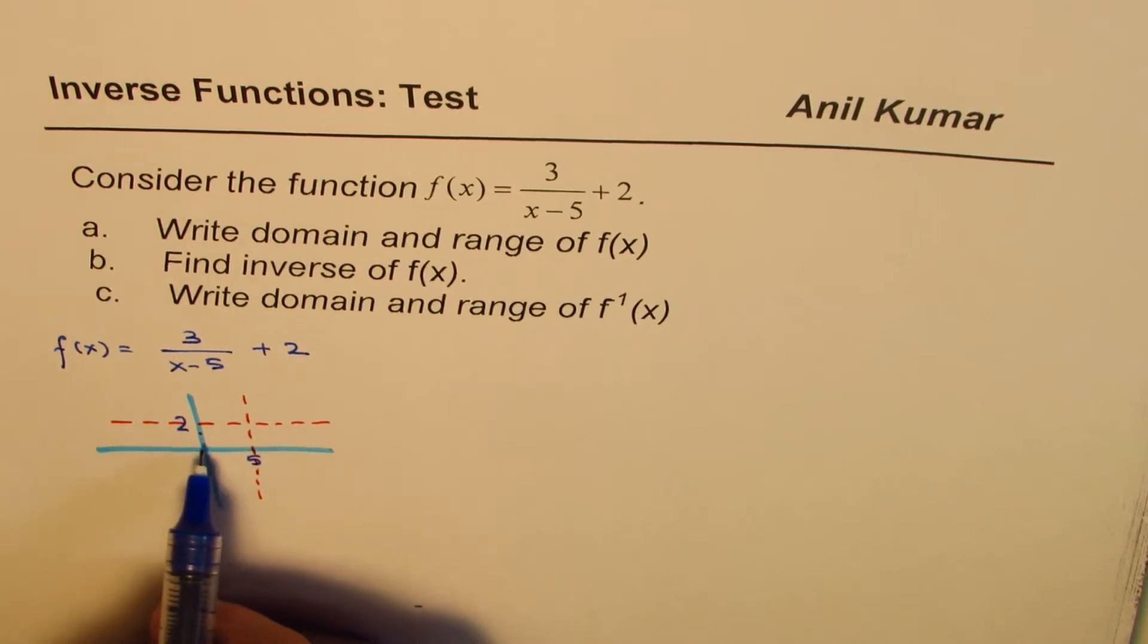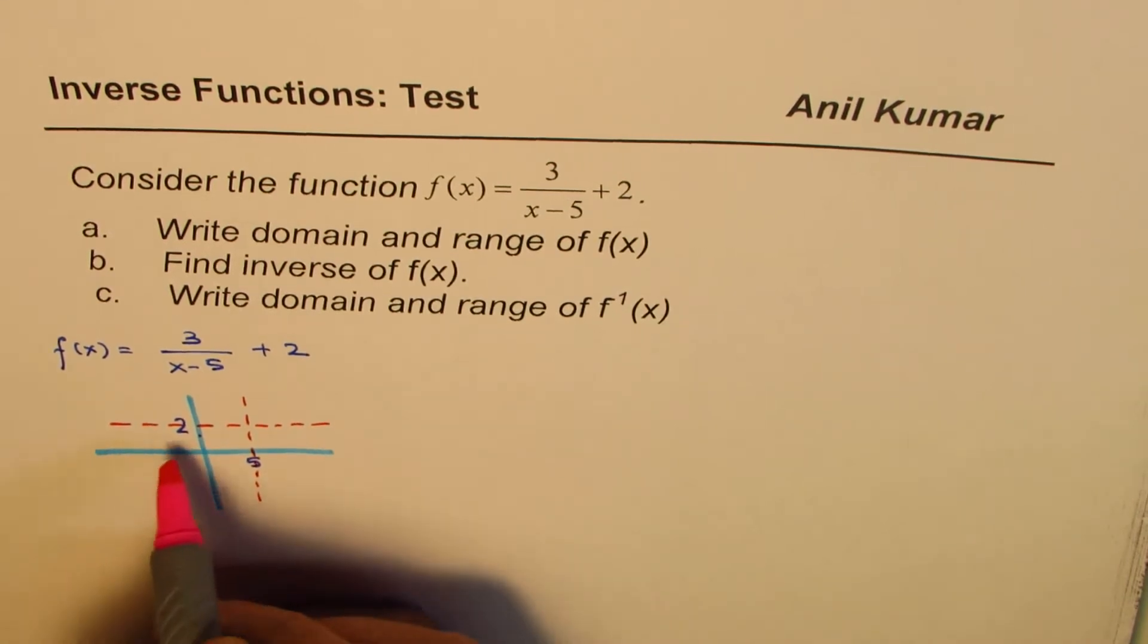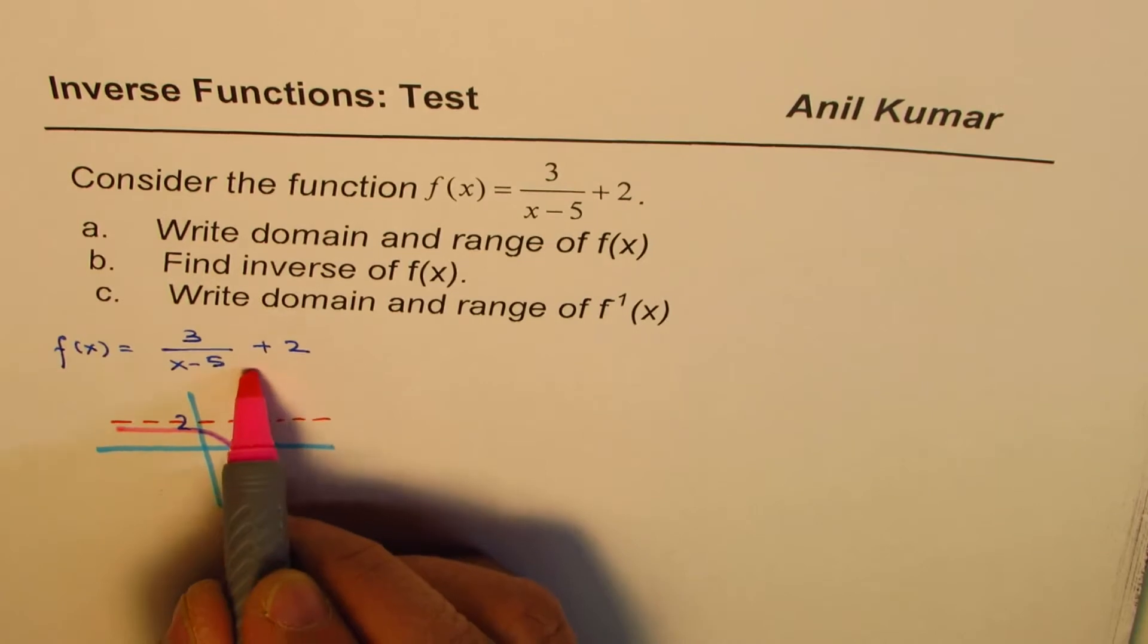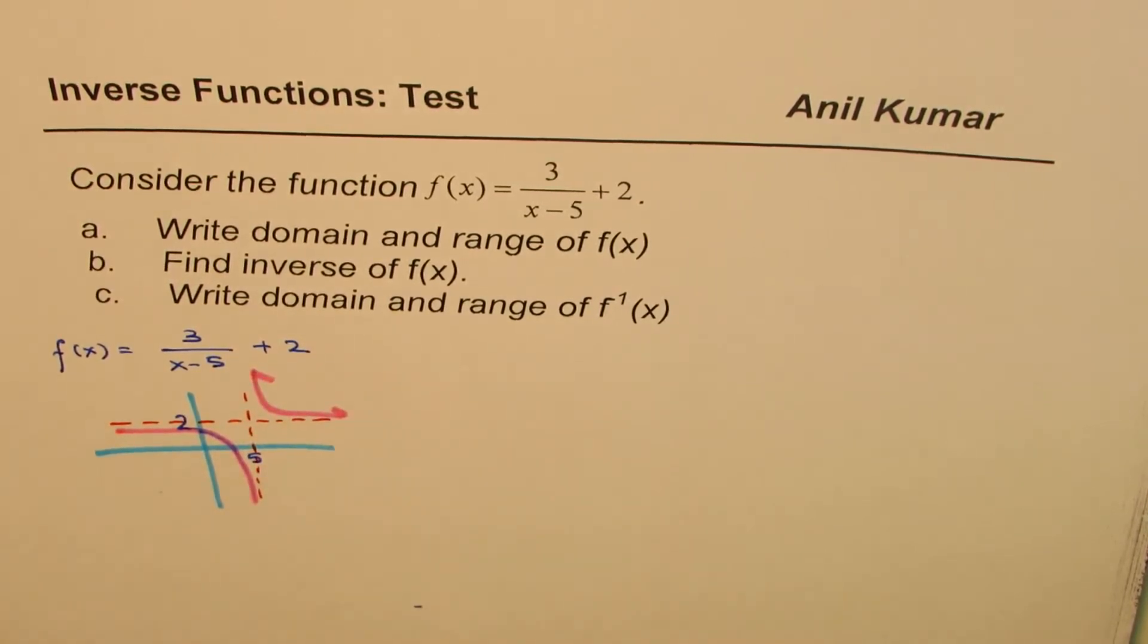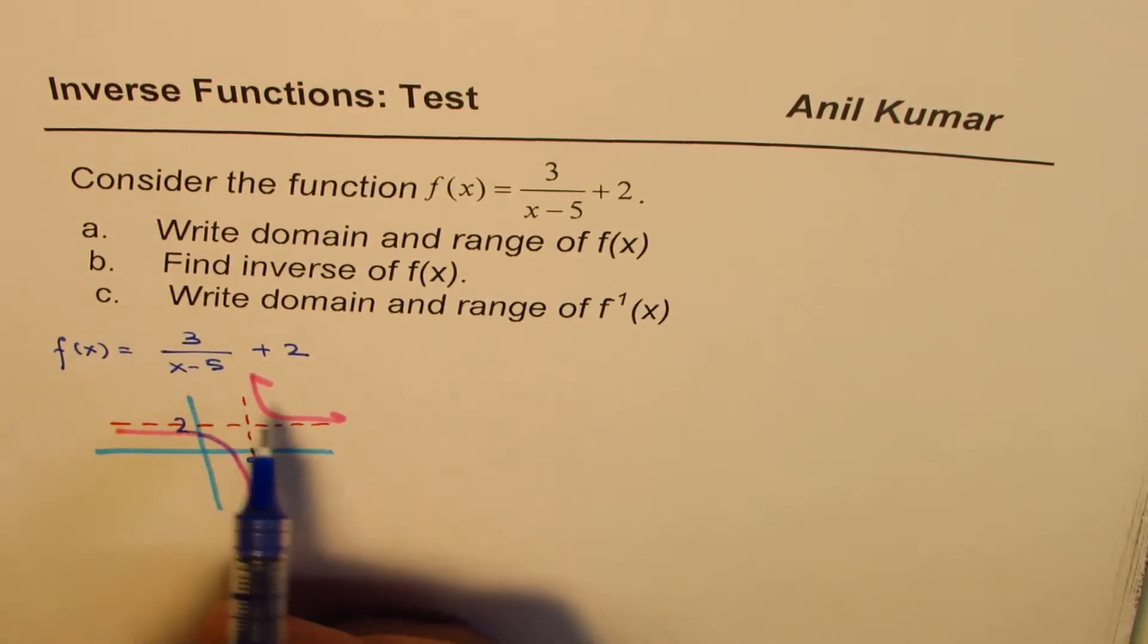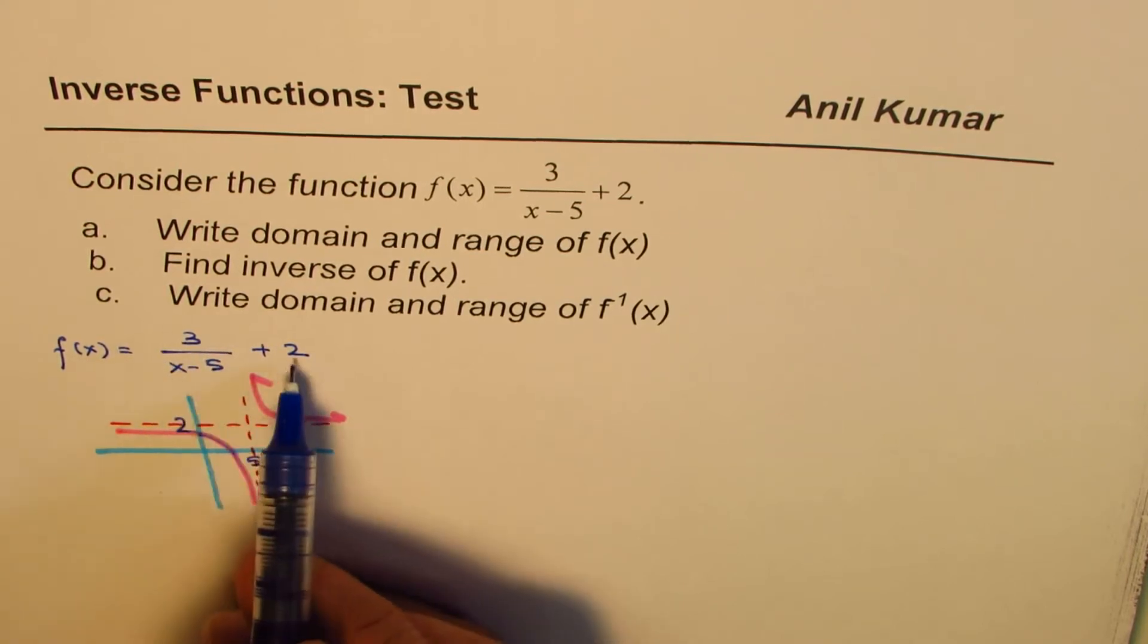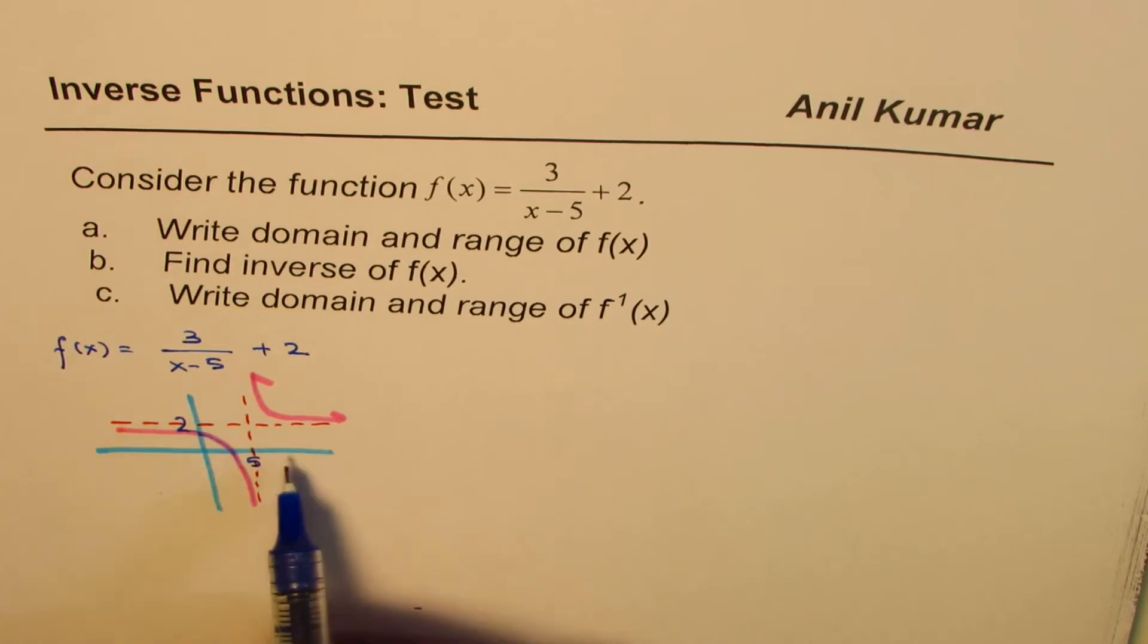So based on just one value, I could sketch my graph. The graph of this function will be kind of like this. You could also substitute large value. If I write x as a large value, then I will see that this function approaches 2. So that becomes the function.